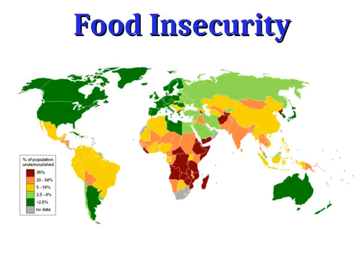Despite all of this intensification and the increases in yield created by things like the Green Revolution, we still see widespread food insecurity around the world. This means the inability of people to ensure a steady food supply for themselves. We see significant undernourishment and hunger in many parts of the world.